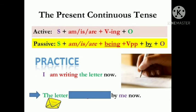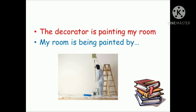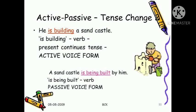For present continuous tense, the passive voice formula becomes: Object + is/am/are + being + Verb (third form) + by + Subject. Examples: 'I am writing the letter now' becomes 'A letter is being written by me.' 'The decorator is painting my room' becomes 'My room is being painted by the decorator.' 'He is building a sand castle' — present continuous — becomes 'A sand castle is being built by him.' So in present continuous, 'being' is added before the verb's third form.